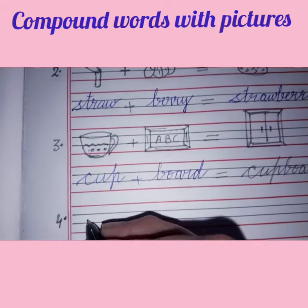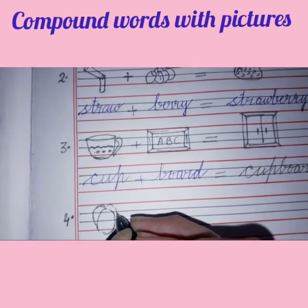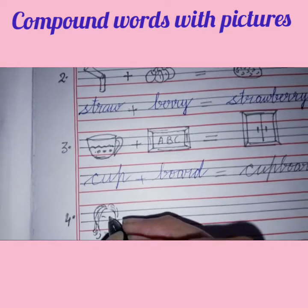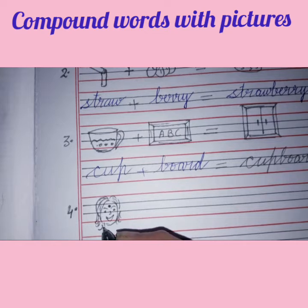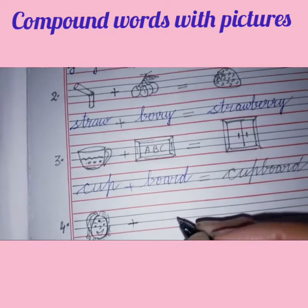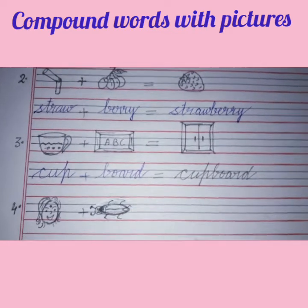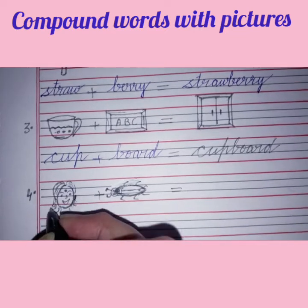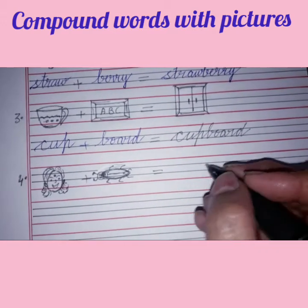Number four: draw a lady here. Now, plus a bug — it can be a cockroach, like this. It's a bug. It has six legs and two antennas. When we combine these two words we make a new word: ladybug.